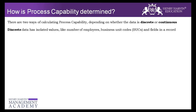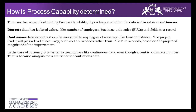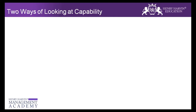As you all know, discrete data includes things like number of employees, different business units, count, pass/fail, nominal, and ordinal — while continuous data is that which can be infinite.